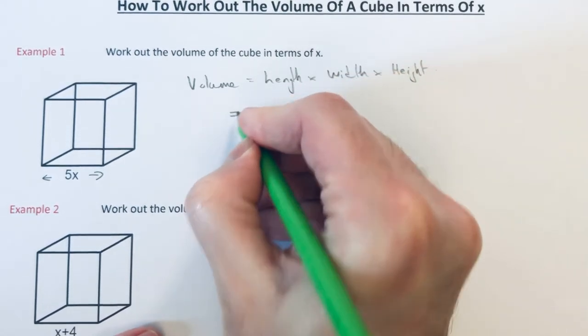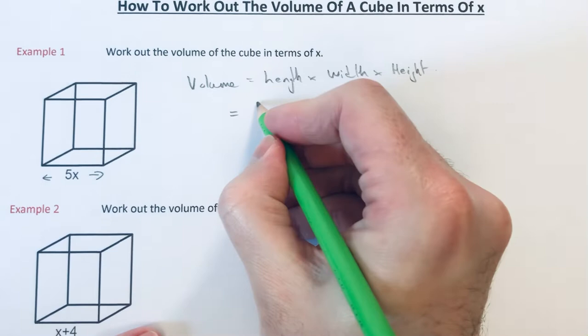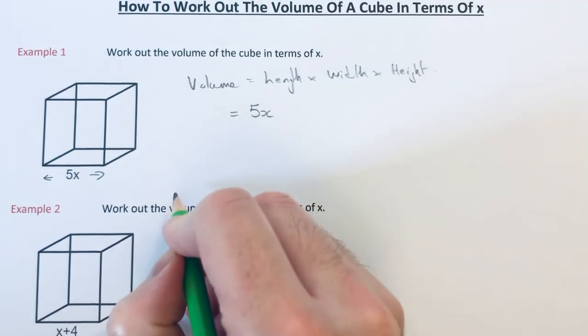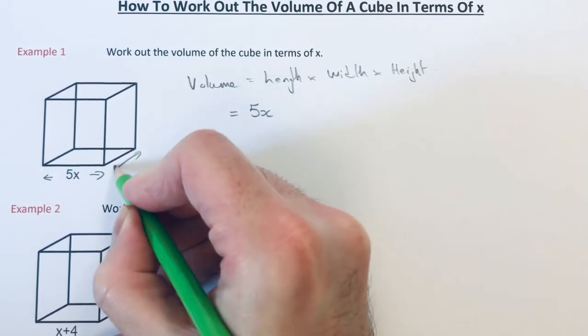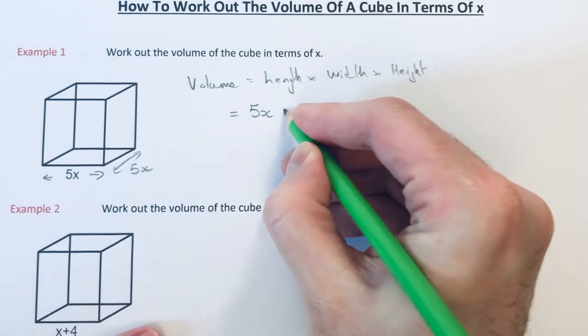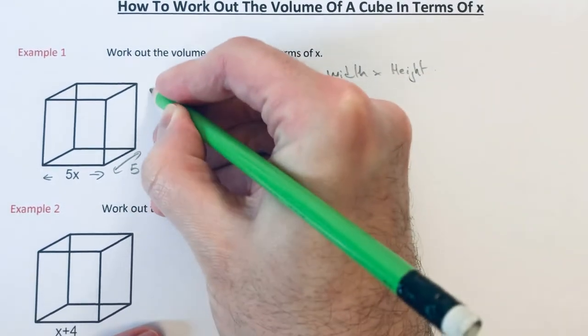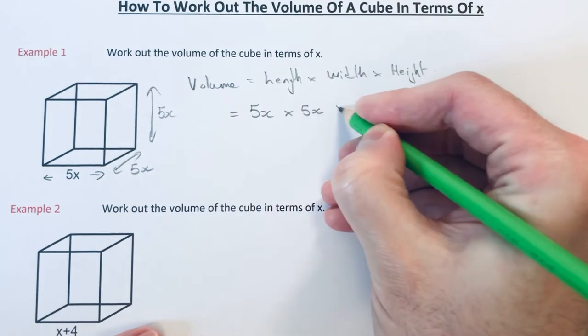On this example here we multiply 5x which is the length. The width is also 5x because it's a cube and so is the height, that is also 5x.